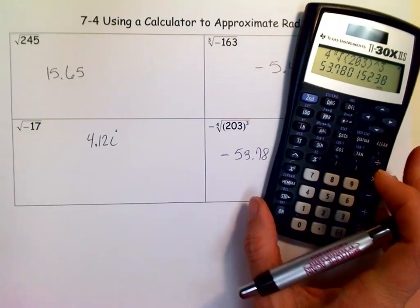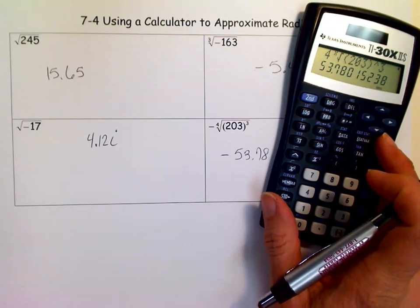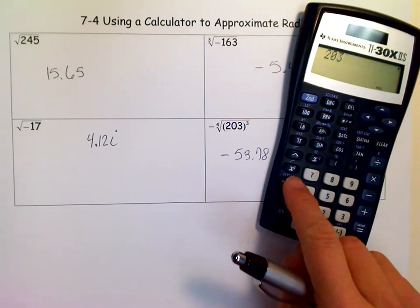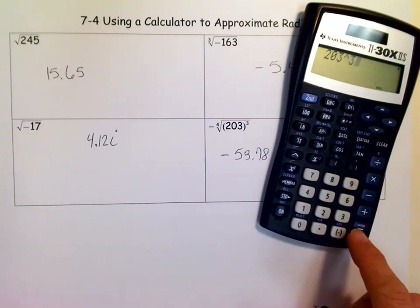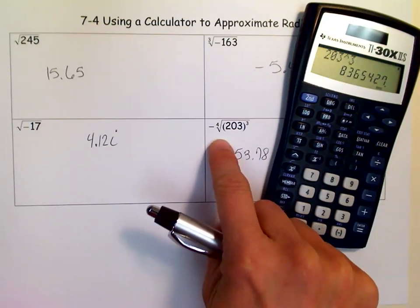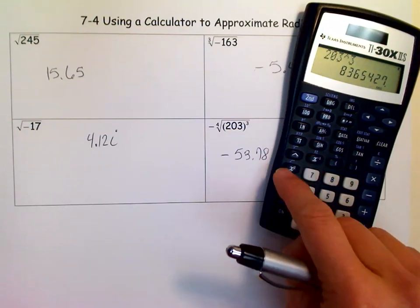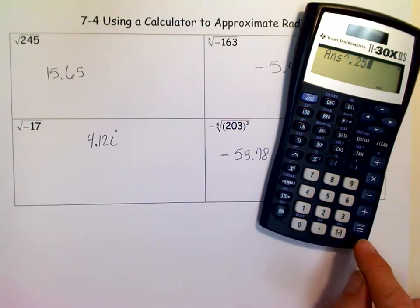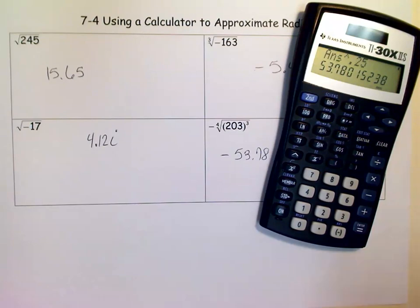We get negative 53.78. Just wanted to check to see if it did it correctly. Let's take 203 and cube it. Then we're going to take that answer to the one-fourth power, which you'll learn later. This is just me checking to make sure we're getting the right answer, and we did.